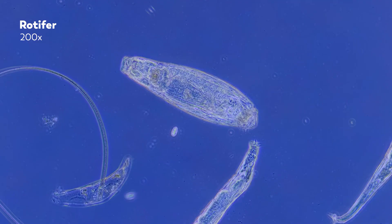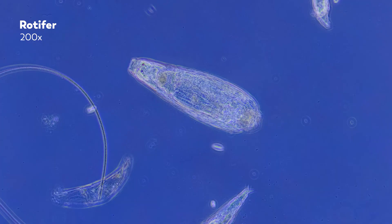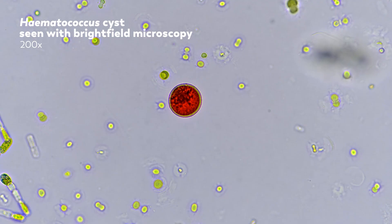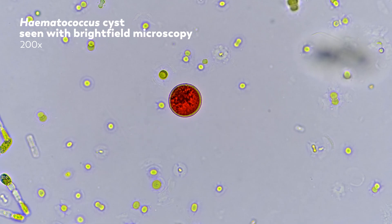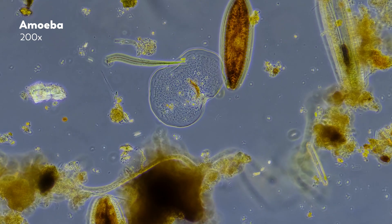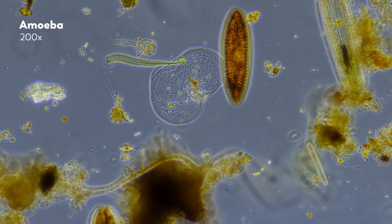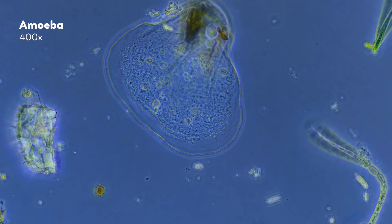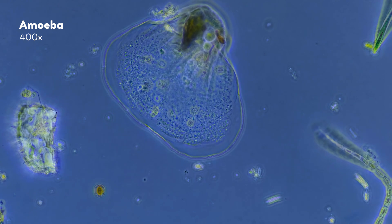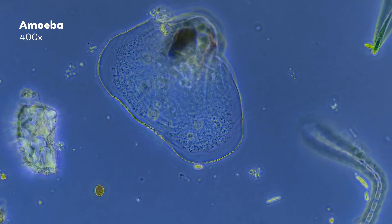Another method to get better contrast than brightfield microscopy is called phase contrast microscopy, and it's built on working with a property of light that we can't actually directly experience. Microbes — or really anything easily observed with brightfield microscopy — are called amplitude objects, because as light passes through them, the amplitude of the light wave changes, which we see as changes in light intensity. But there is another class of specimens called phase objects. As light passes through these objects, the waves slow down and shift slightly in phase compared to the unaffected light around them. Our eyes don't process these differences in phase, so in the final image these organisms are very difficult to see.